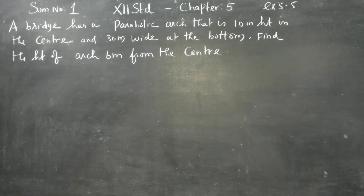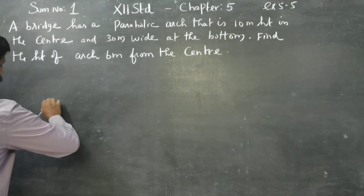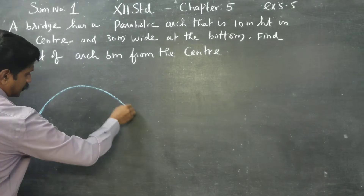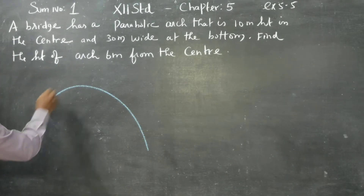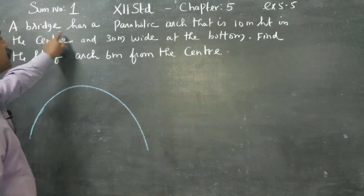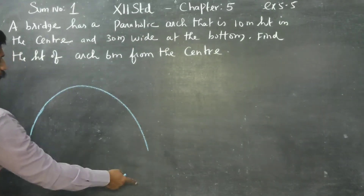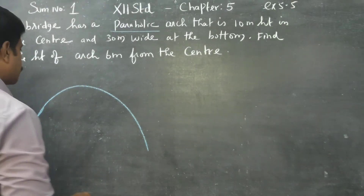Dear students, in exercise number 5.5, a bridge has a parabolic arch that is 10 meters height in the center and 30 meters wide at the bottom. One bridge is shaped in this style. The bridge has a parabolic arch that is 10 meters in height.